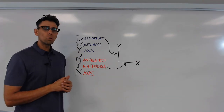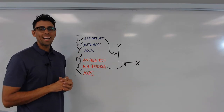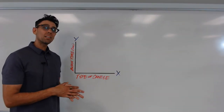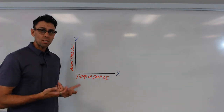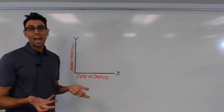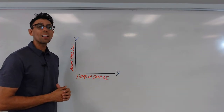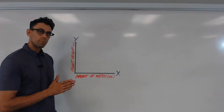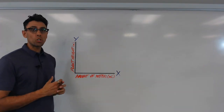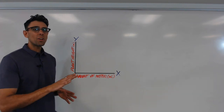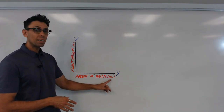Let's take the two experiments and put the variables on their appropriate locations on a traditional graph. For the candle experiment, burn time is our dependent variable and goes on the y-axis — with the units of measurement, probably hours, in parentheses. The independent variable, the type of candle, goes on the x-axis. For the tomato plant experiment, the dependent variable — plant height — goes on the y-axis with units in centimeters. The independent variable, the amount of water added, goes on the x-axis, reasonably measured in milliliters.